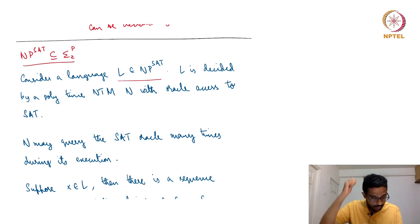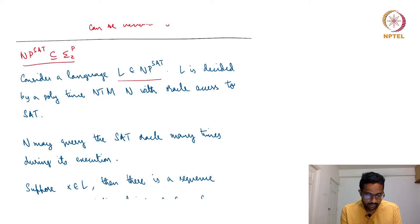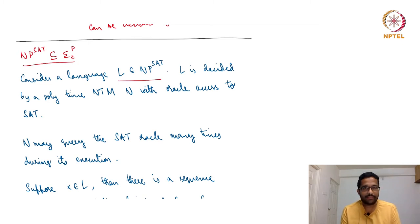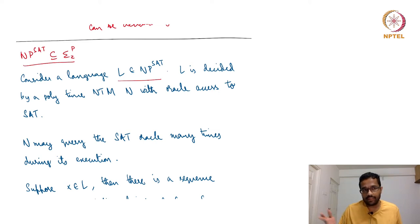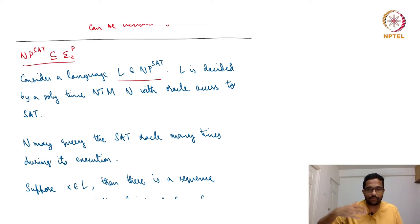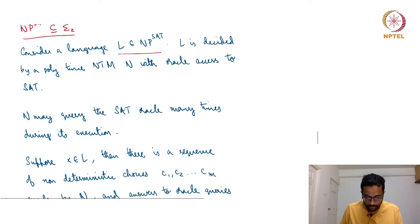This direction is slightly more involved. N is a non-deterministic Turing machine, so it has possibly multiple computation paths and accept/reject outcomes. It also has access to a SAT oracle, meaning it can query the SAT oracle from time to time and use the responses adaptively — if the response is yes, it does something; if no, it does something else.